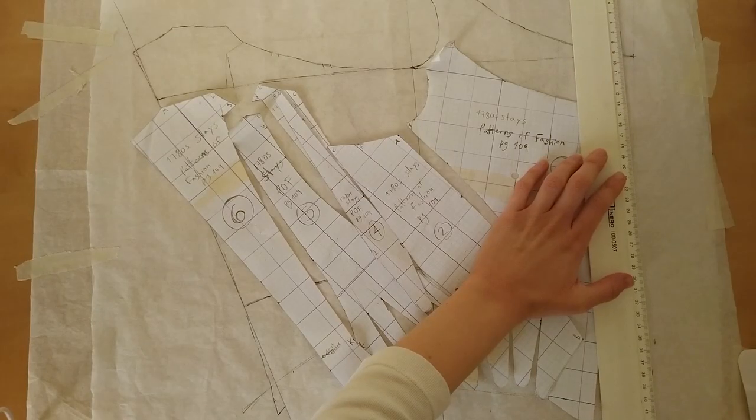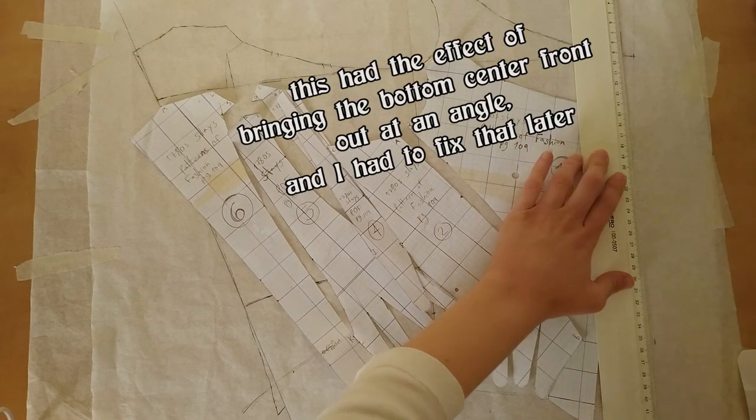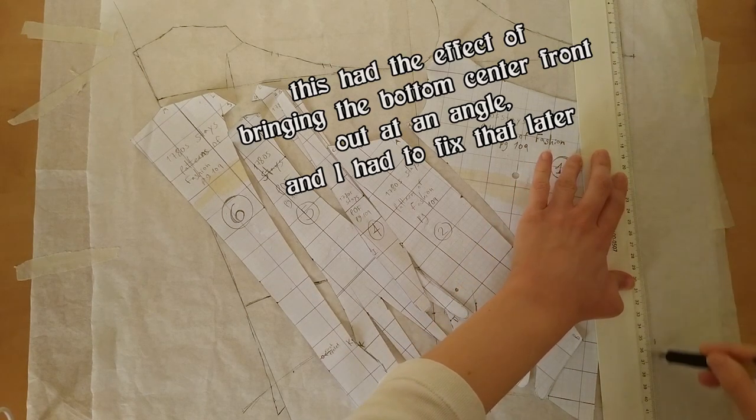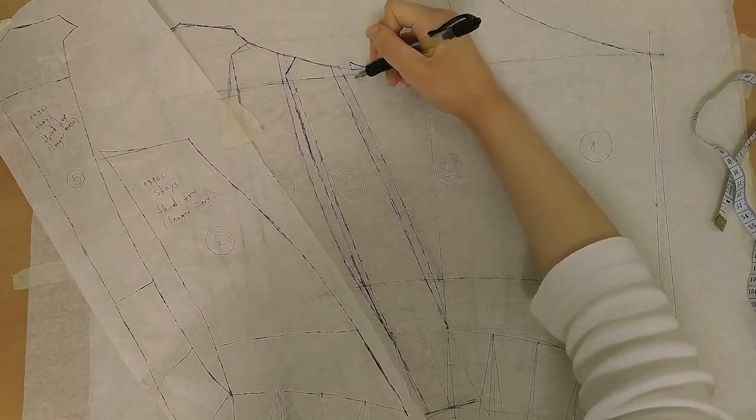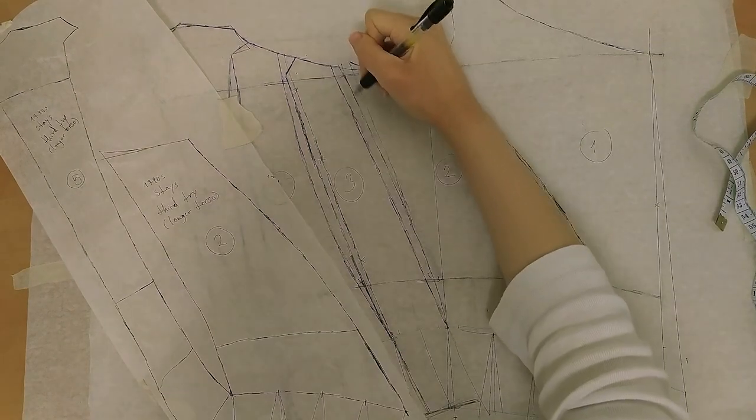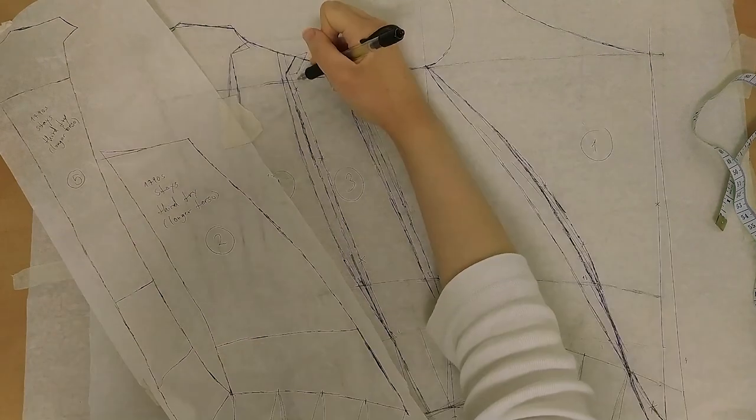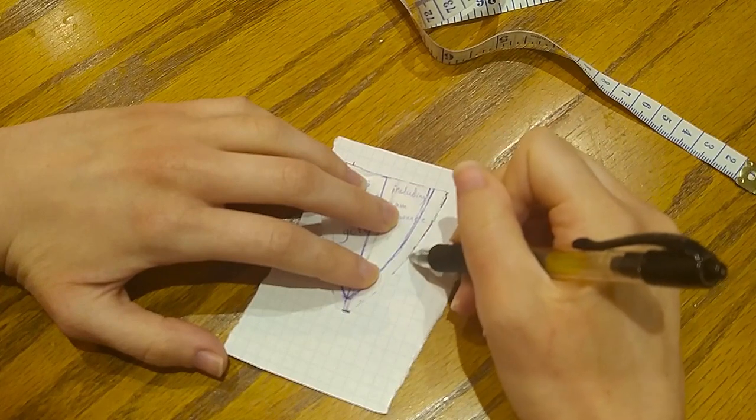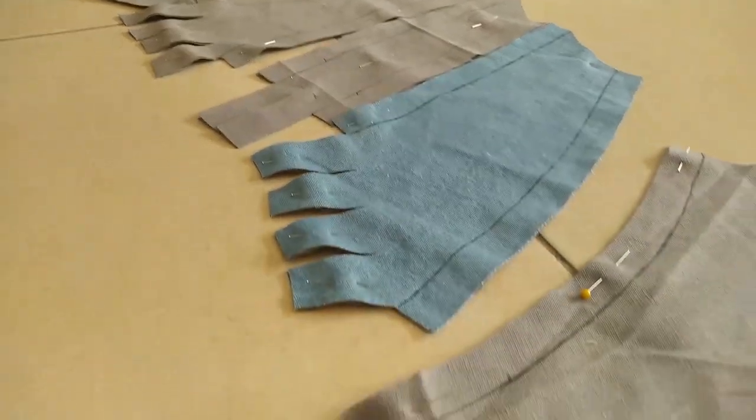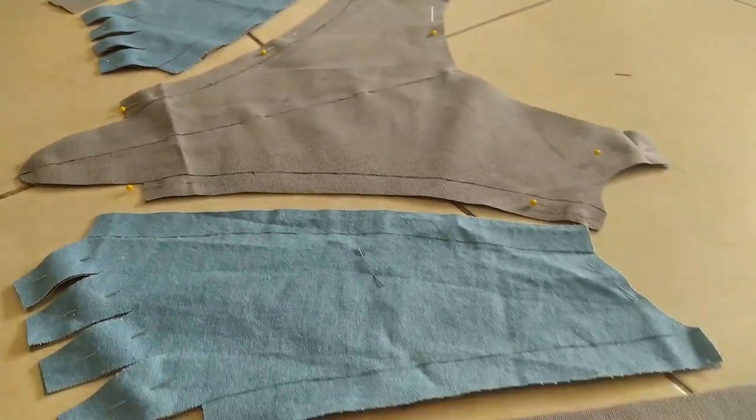I also need to bring the top center front in a bit, to better support the bust and bring the gores slightly towards each other. To fix the way the back gapes away from the body, I brought the side seam in a bit, then shifted the next piece over to meet it, so that the whole thing shifts forward a bit. Lastly, I made the bust gore narrower at the top. Okay, that should work. This should be fine, right?